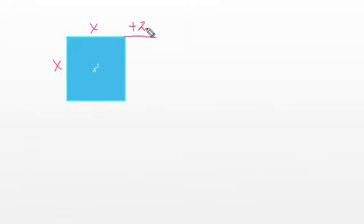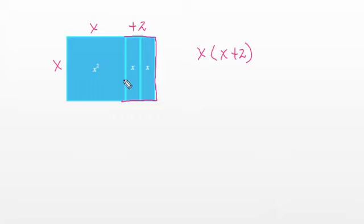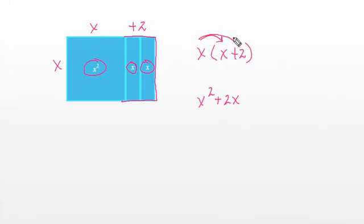We're going to look at another example where we start with our original square quilt of x by x, and this time we're just going to add 2 to one side — not adding anything to the other side. This gives us the expression x times (x plus 2). Looking at the area model, we have 1 x squared and 2 x's. Using the distributive property: x times x gives x squared, and x times 2 gives 2x — two equivalent expressions for this model.